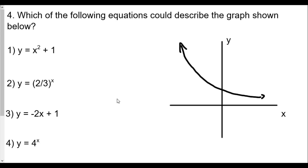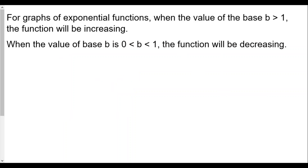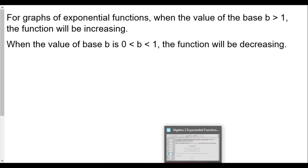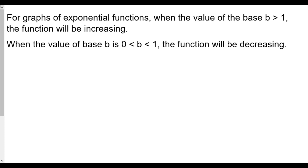Number four: which of the following equations could describe the graph shown? This is definitely an exponential function — not a parabola, so it can't be choice one. It can't be choice three either, which is a linear function y = mx + b. Choices two and four are both exponential functions where the power is the variable x, following the form y = b^x.